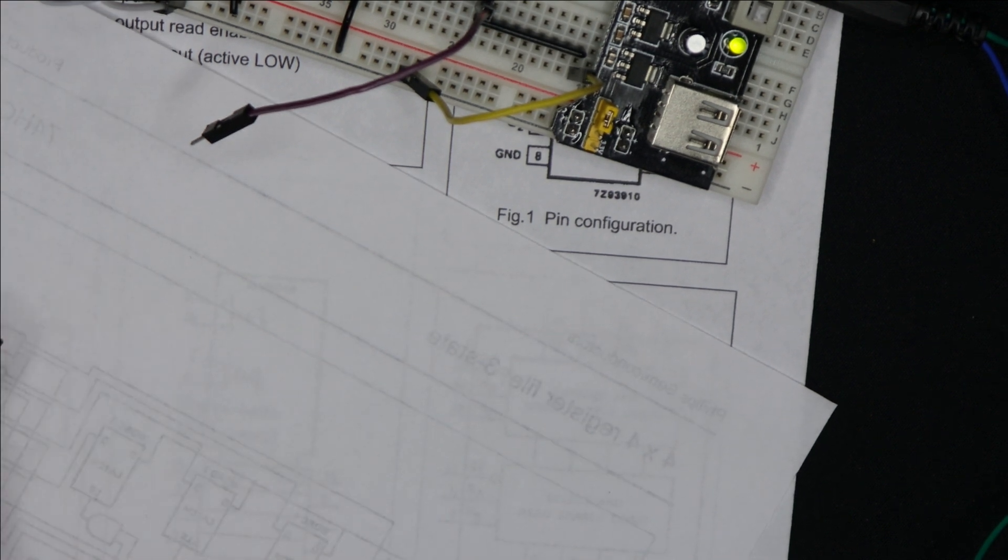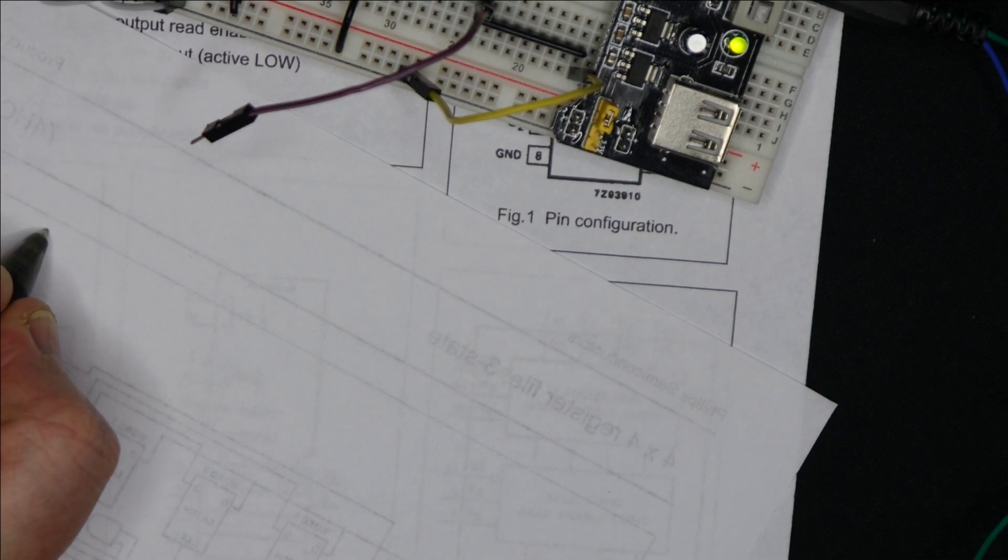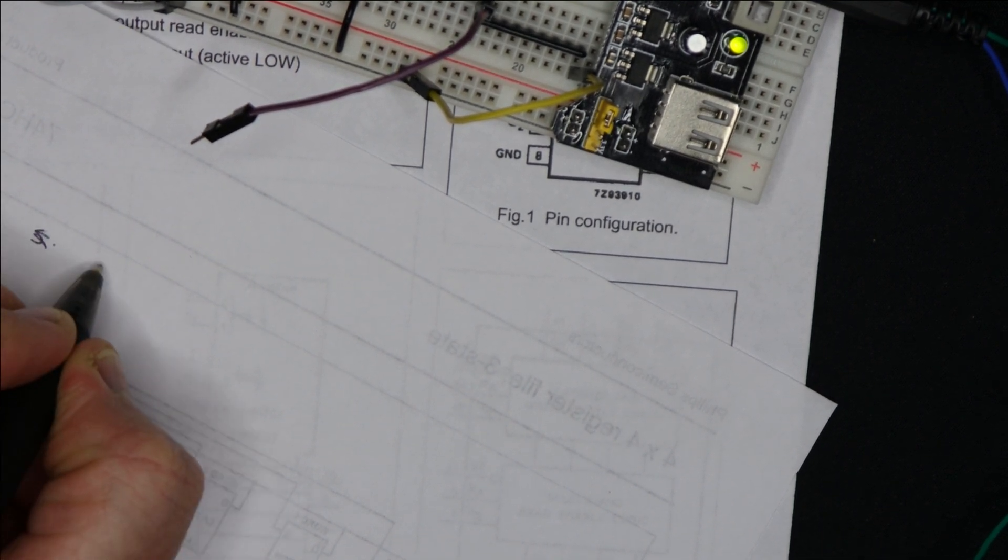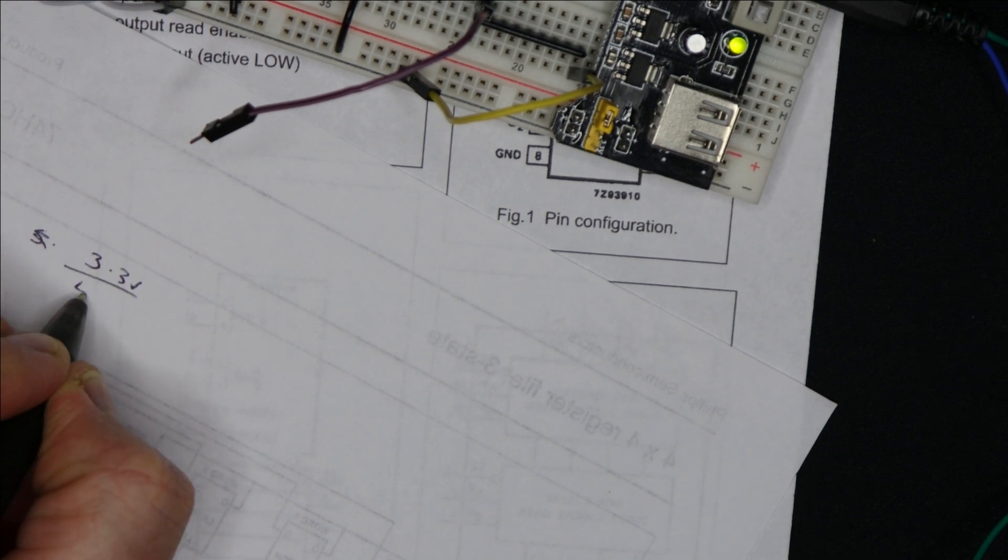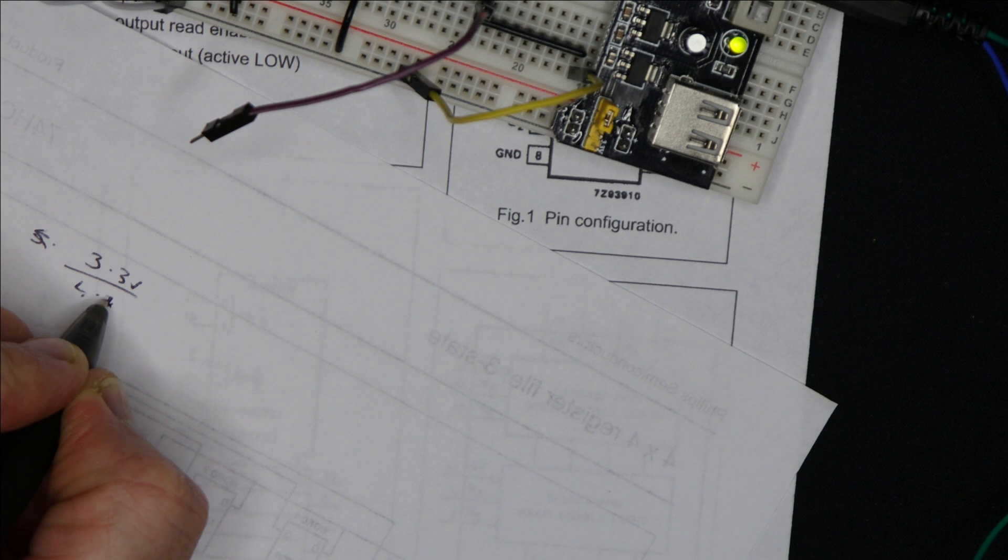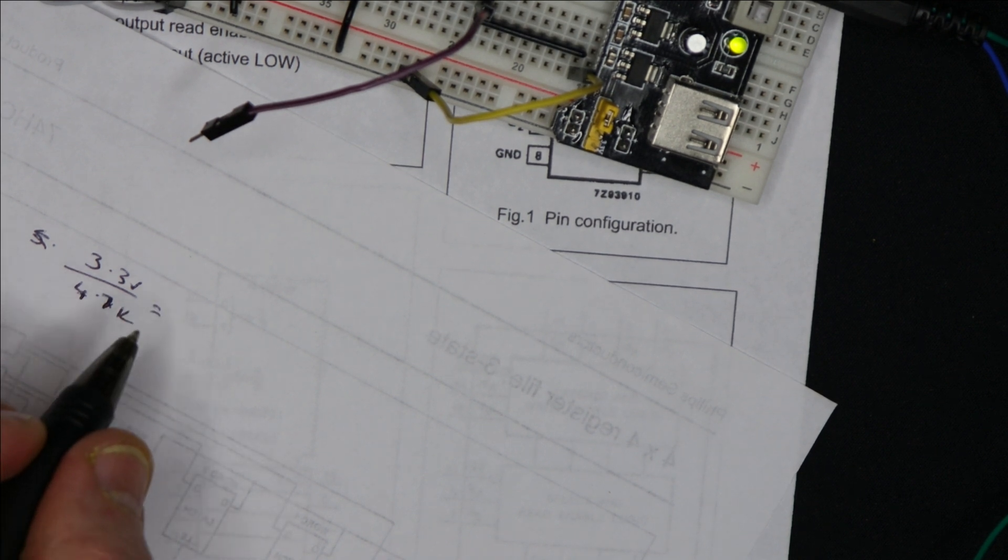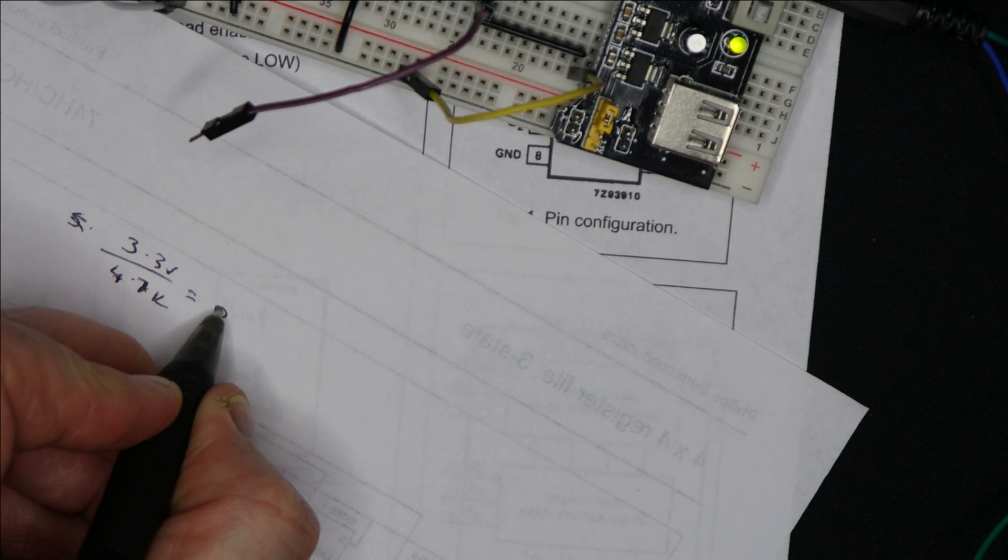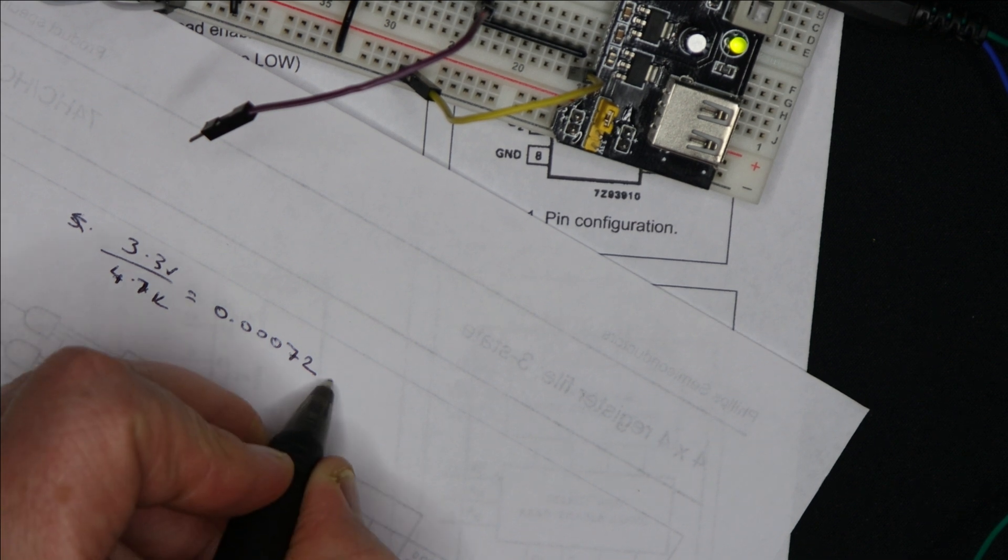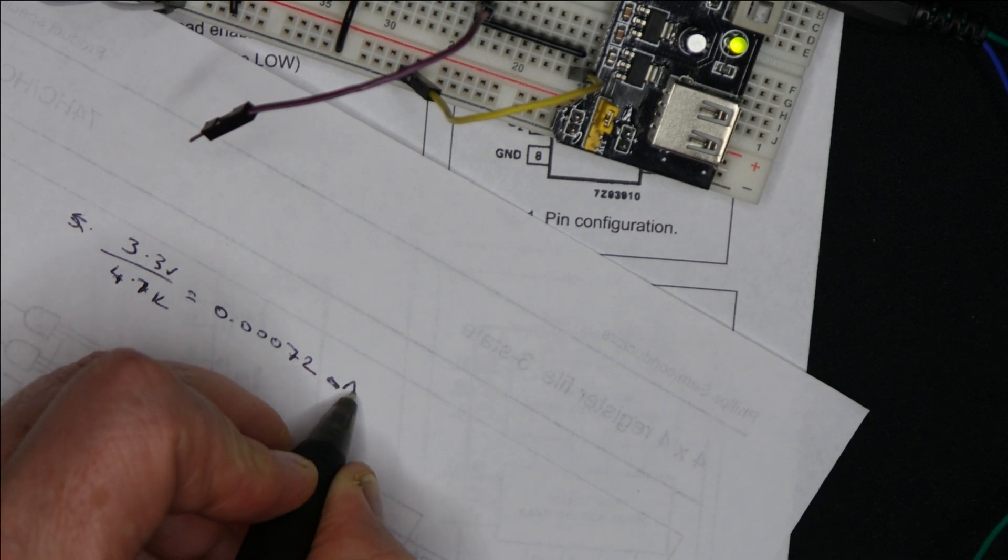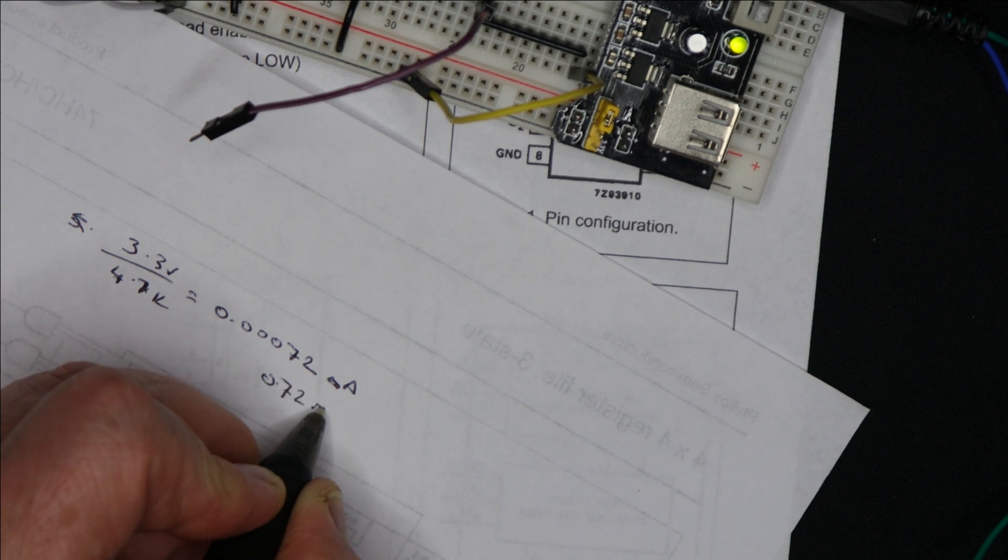So if you want to know the current through that resistor there, it's five, actually what did we get? We've got about 3.3 volts, something like that. 3.3 volts over 4.7K, which if I stick it through my calculator, gives something like 0.00072 amps, which is 0.72 milliamps.